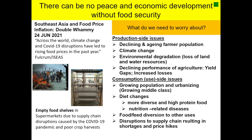It's very obvious that there can be no peace and economic development without food security. Broadly, there are two sets of issues: production side issues and consumption side issues. On the production side, issues such as the declining and aging farmer population, climate change, environmental degradation, and the declining performance of agriculture as expressed through yield gaps and increased losses. On the consumption side, a growing population resulting in growing demand for food, and also an urbanizing middle class demanding diet changes — more diverse and high-protein food — as a result of which nutrition-related diseases are also emerging as a food security issue. And of course, the diversion of food to feed animals, and more recently, disruptions to supply chains resulting in shortages and price hikes.